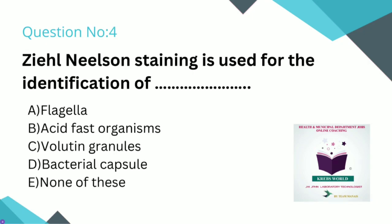Question number 4: Ziehl-Neelsen staining is used for the identification of which of the following? Option A: Flagella. Option B: Acid-fast organisms. Option C: Volutin granules. Option D: Bacterial capsule. Option E: None of these. Here the correct answer is Option B — Acid-fast organisms.